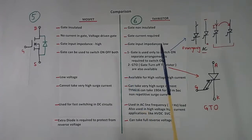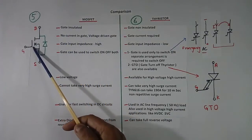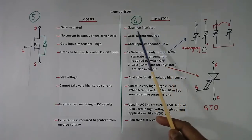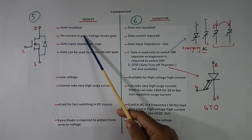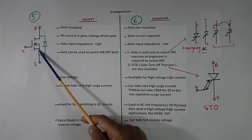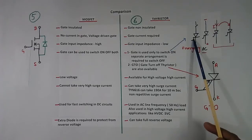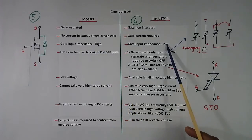This is a comparison chart — this side MOSFET, this side thyristor. In case of MOSFET, gate is insulated — you are seeing insulation, there is no connection here. But in case of thyristor, gate is not insulated. Because gate is insulated, no current in gate flows — this is voltage-driven gate. When we connect a voltage here, electric field is generated and this becomes ON, no current will flow. In thyristor case, gate current is required. Gate input impedance is high for MOSFET; gate input impedance is low for thyristor, it requires current.